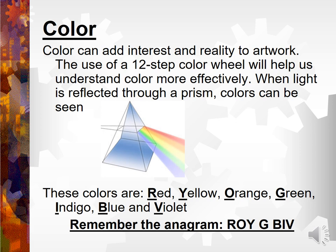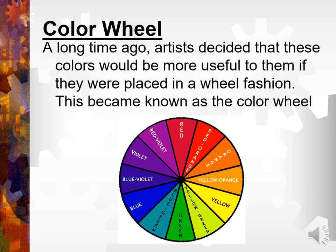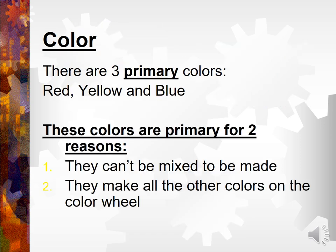And we will talk about colors and the color wheel, and primary color and secondary color. There are three primary colors: red, yellow, and blue. These colors are primary for two reasons: they cannot be mixed to be made, and they make all the other colors on the color wheel.